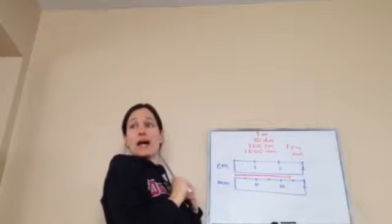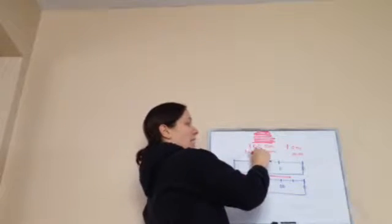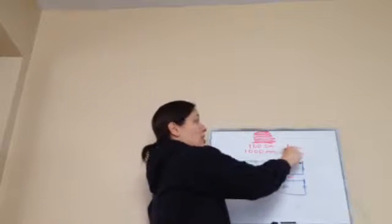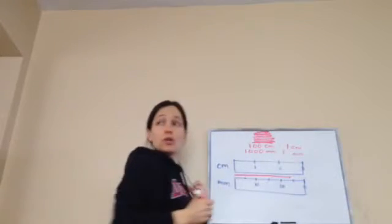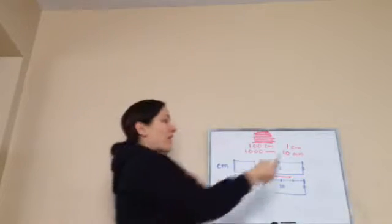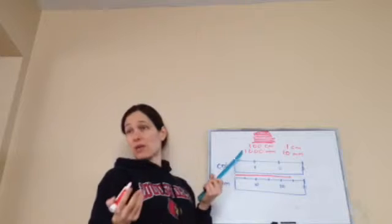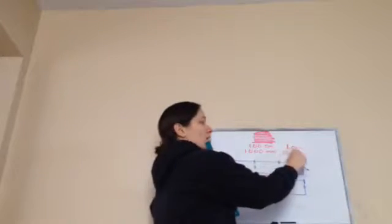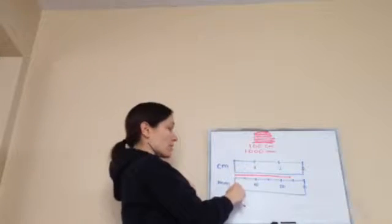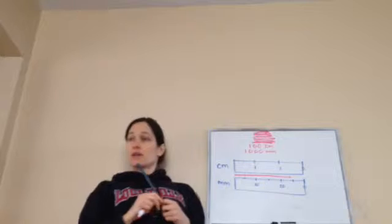If we start with centimeters and move down, see what's happening to the zeros — I'm adding more. Instead of saying 100 centimeters, because we're not talking about meters now, when looking at these two I'm going to say it's one centimeter. I added a zero as I move down. So one centimeter equals how many millimeters? Ten. Do you see how it works? One centimeter equals ten millimeters.